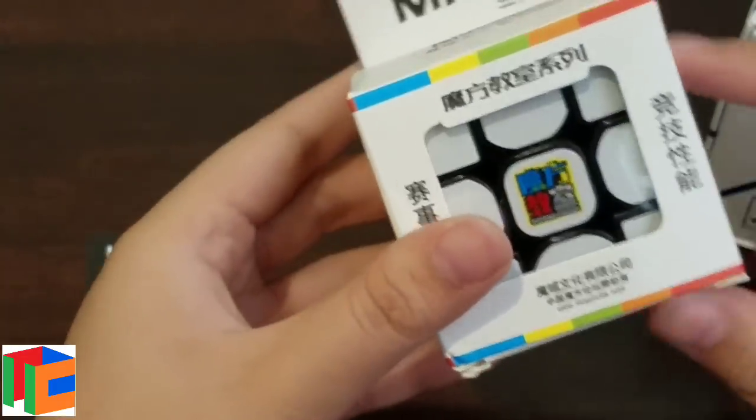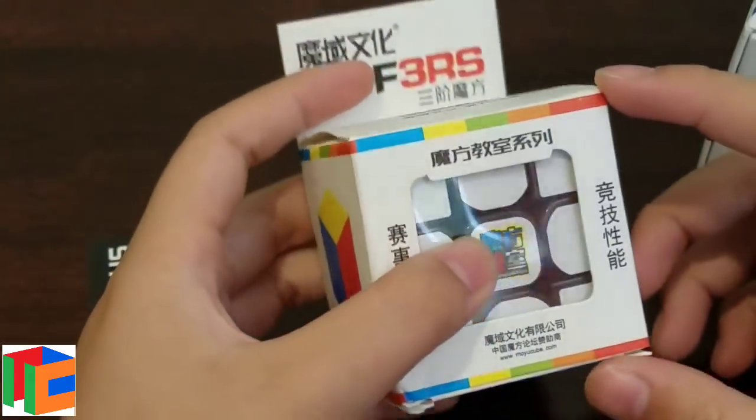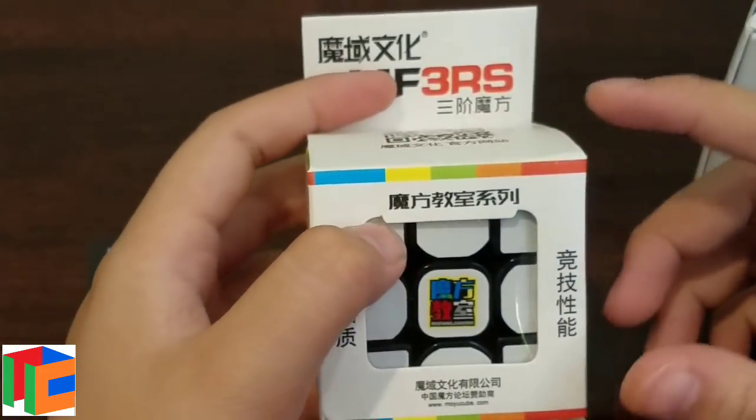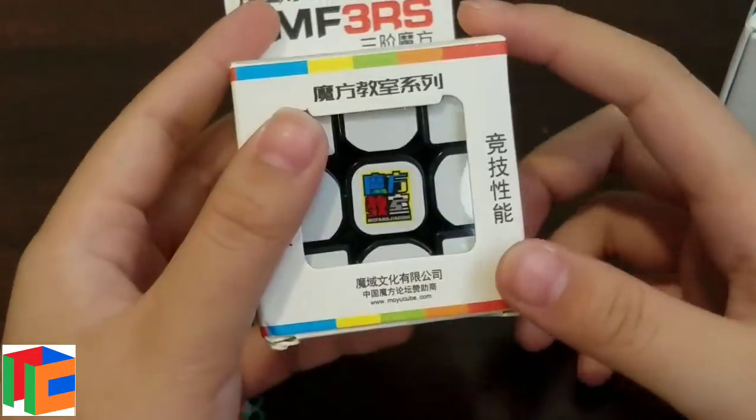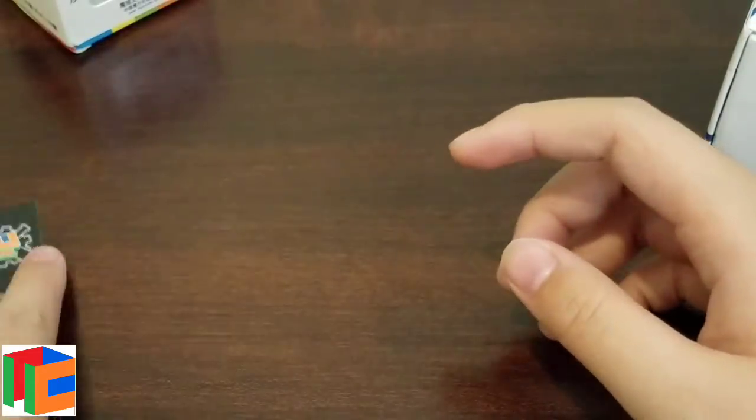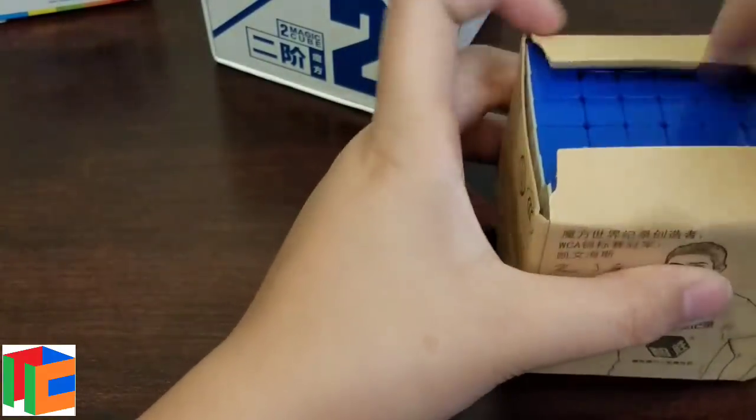But yeah, so I just got this MF3RS because I want to switch my MF3RS with the stickerless black. And I watched a tutorial on how to do that. I'll put a link in the description to Cuber's channel where he did this. And we'll just get into this Yushin Little Magic 6x6 first.